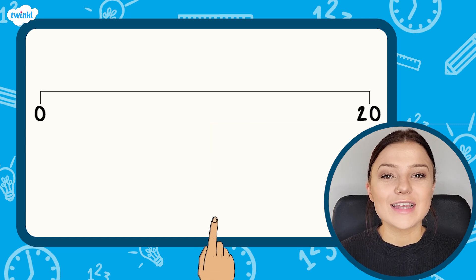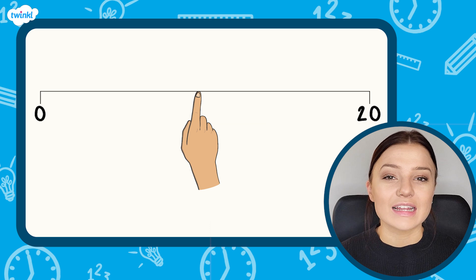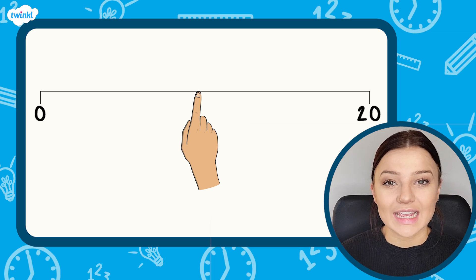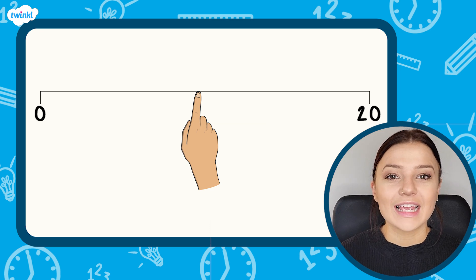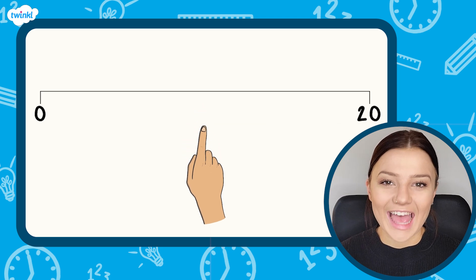The halfway point on this number line is here. The difference between 0 and 20 is 20 and half of 20 is 10. So the number halfway along the number line is 10.